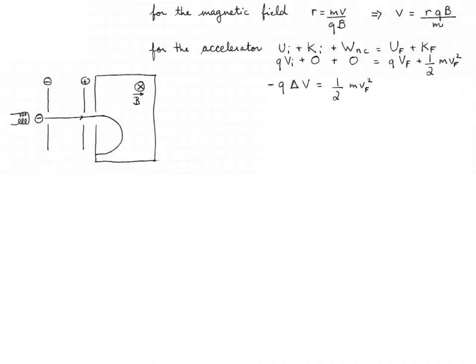Let's rearrange the equation so that we have delta V, the potential difference between the plates. We can write that negative Q multiplied by delta V — where delta V stands for V_final minus V_initial — is equal to one-half m·v_final squared.